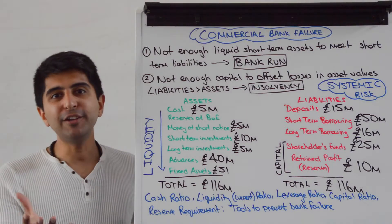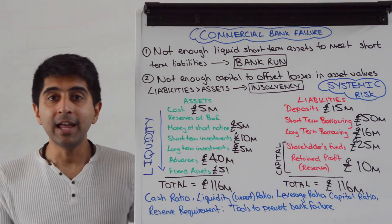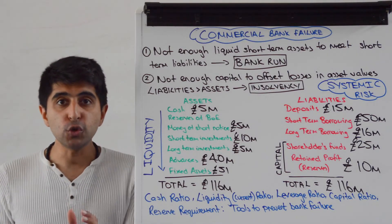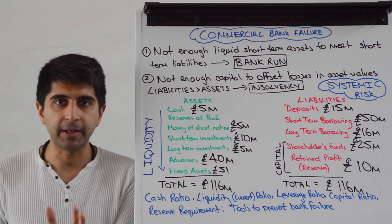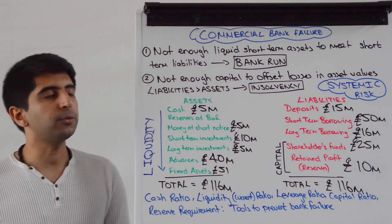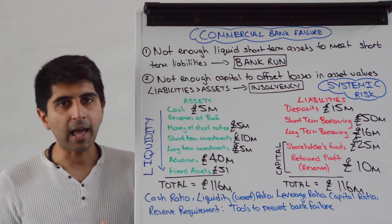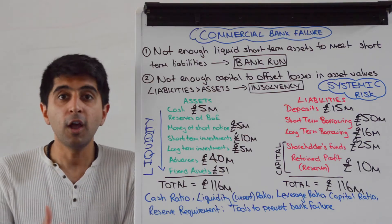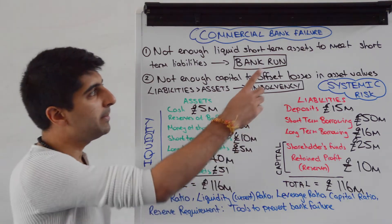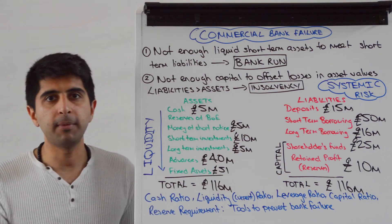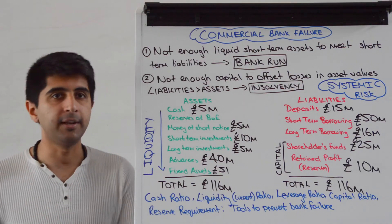Hi everybody! Having understood the balance sheet in real detail, let's now look at two ways in which a commercial bank can fail. The first way is if a commercial bank doesn't have enough liquid short-term assets, also known as current assets, to meet its short-term liabilities, i.e. its current liabilities.